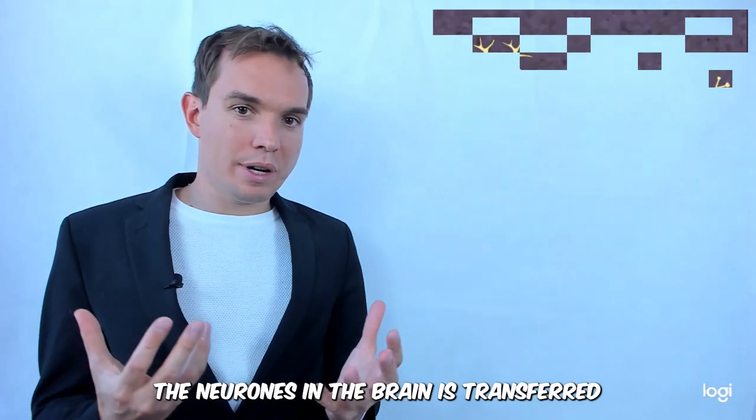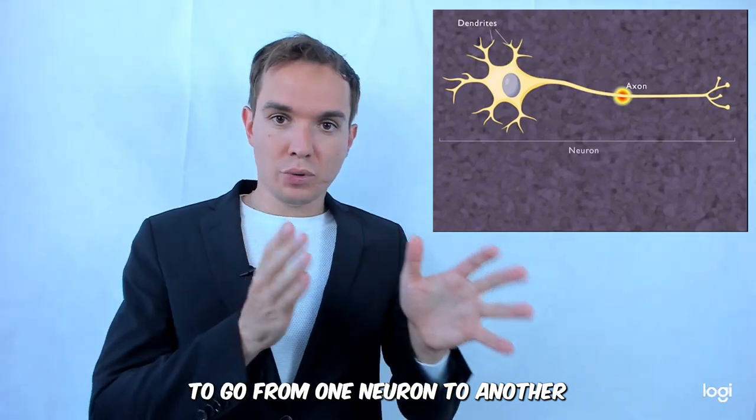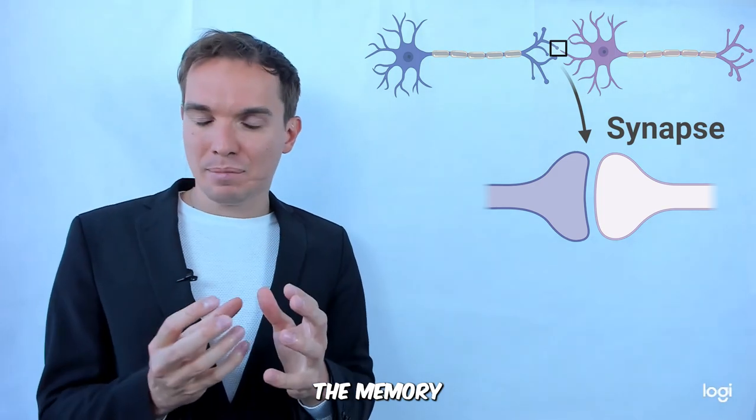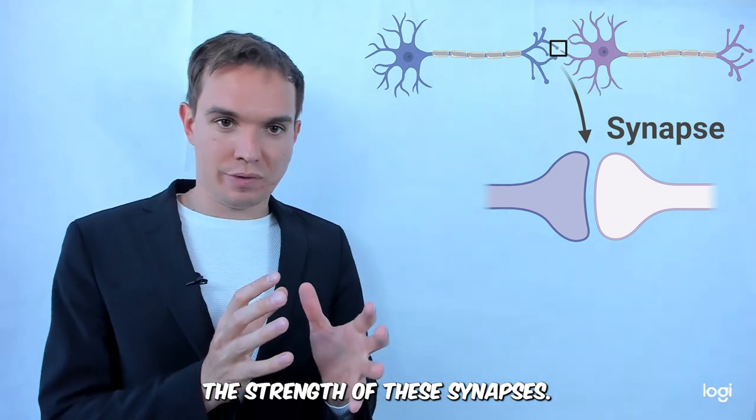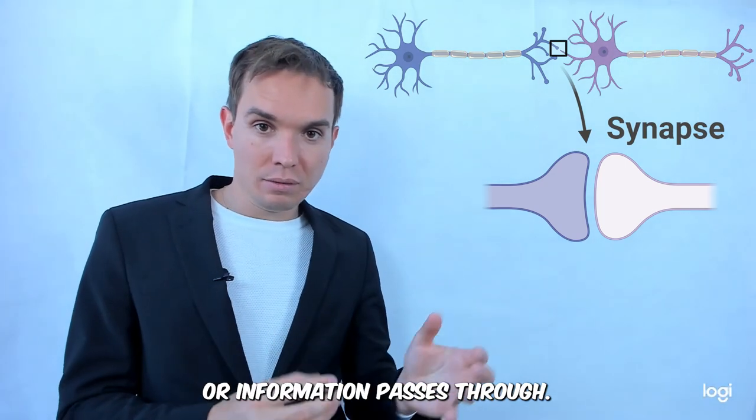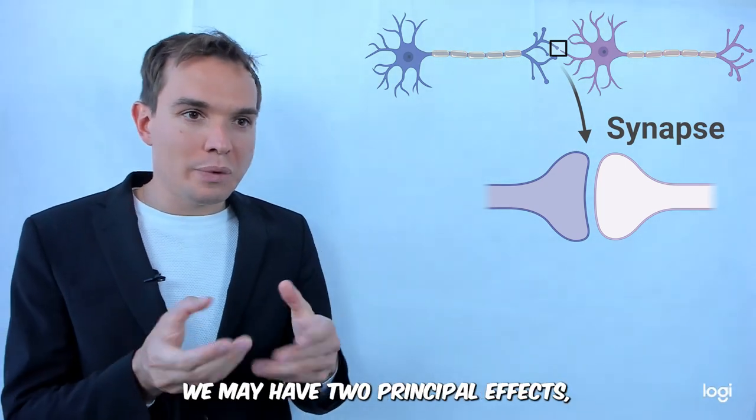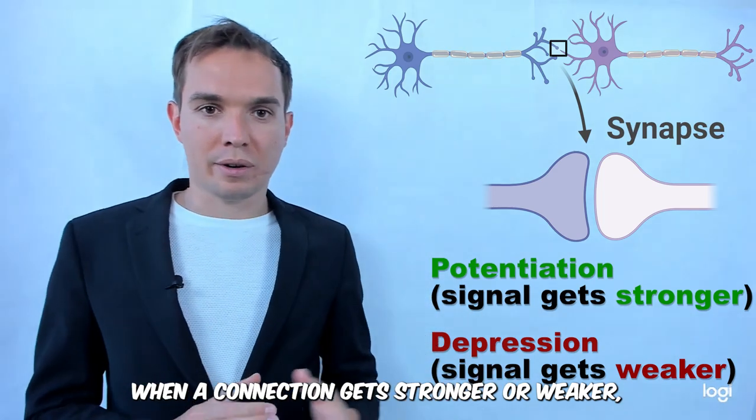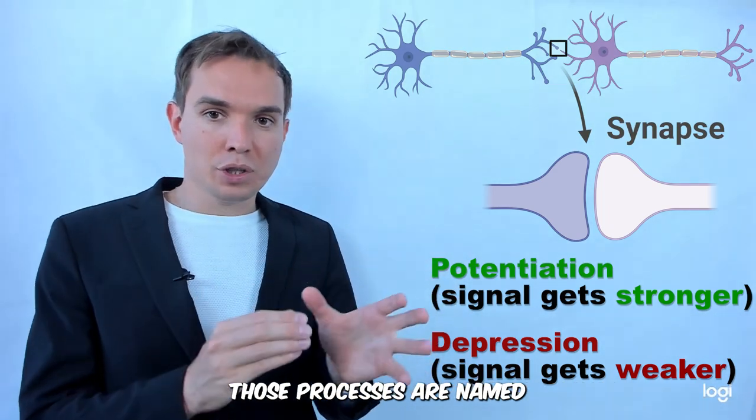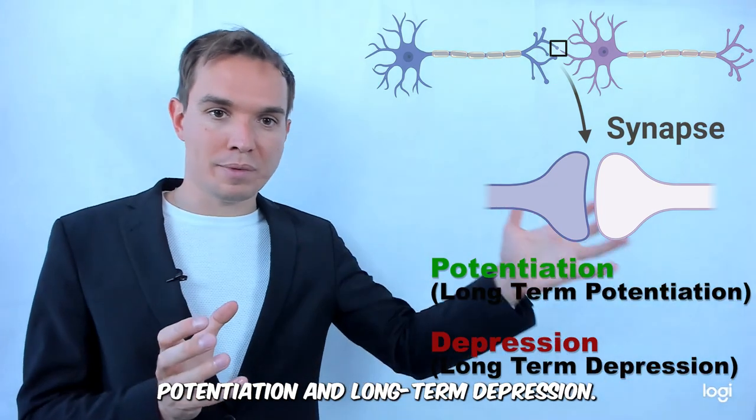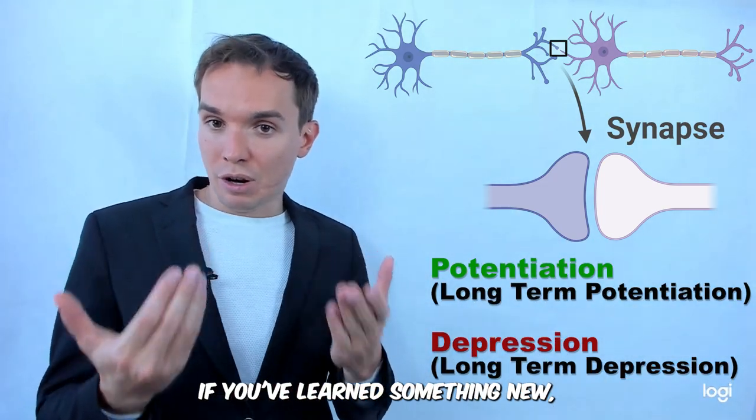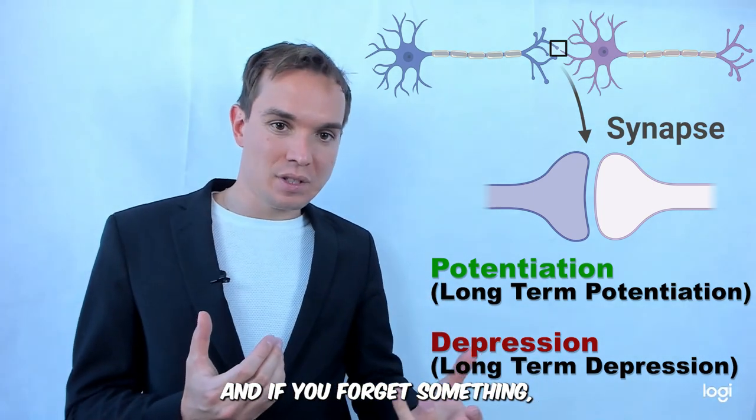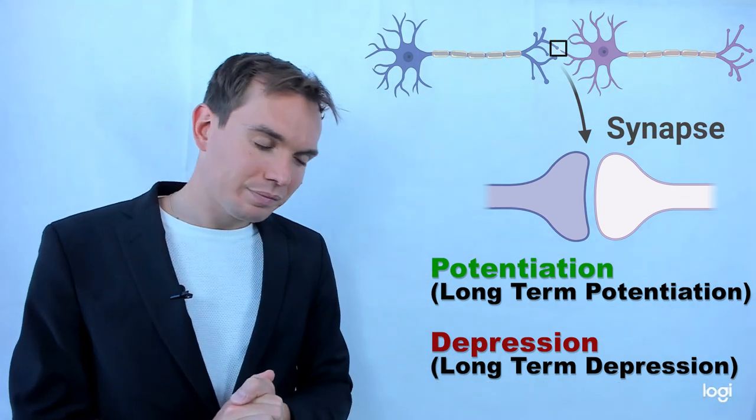Information between the neurons in the brain is transferred by the means of electrical signals, and to go from one neuron to another the signal needs to pass a gap named a synapse. One of the core processes behind memory formation is actually changing the strengths of these synapses, or in simple speaking how effectively the signal or information passes through. Logically we may have two principal effects: potentiation or depression. Simply speaking, when connection gets stronger or weaker. Scientifically speaking, those processes are named long-term potentiation and long-term depression.